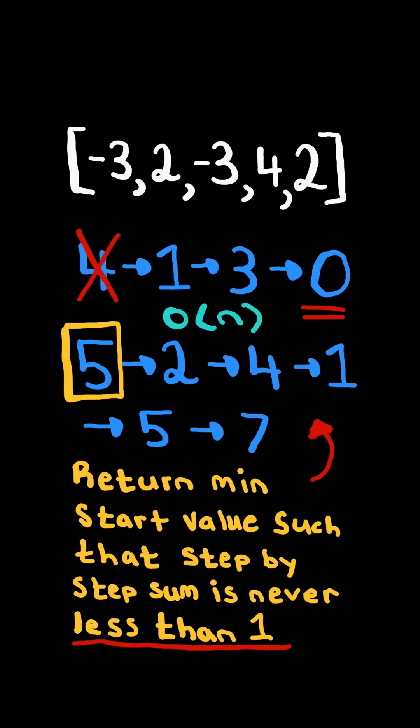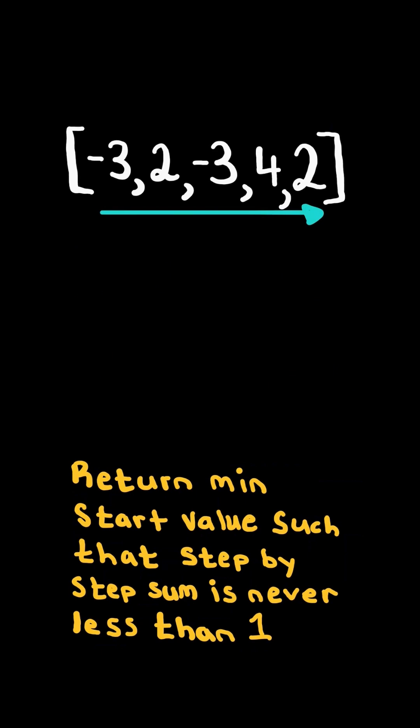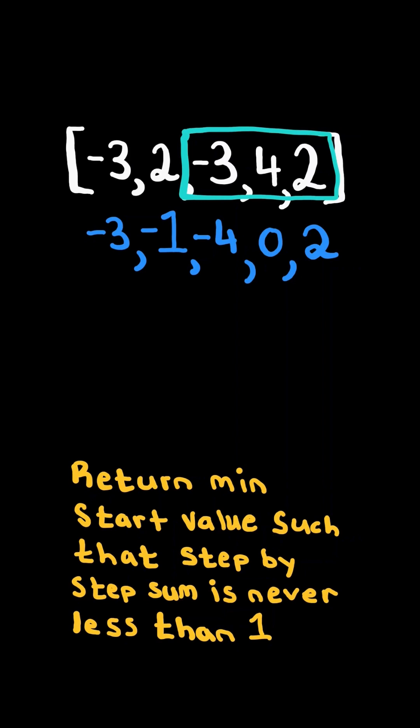We will solve this in O of n time. First, we calculate the cumulative sum. We start with negative 3, add 2 to get negative 1, and so on.